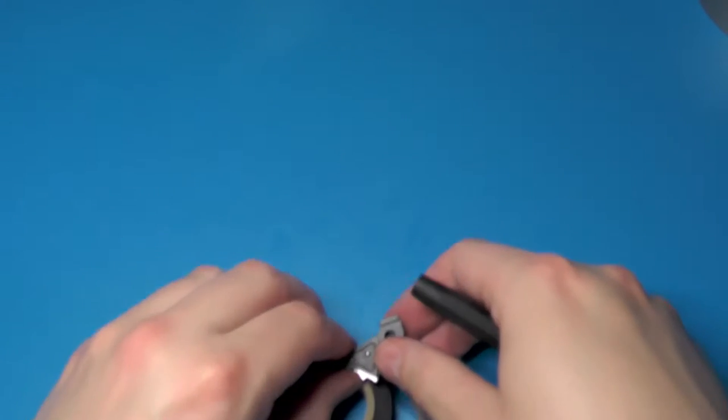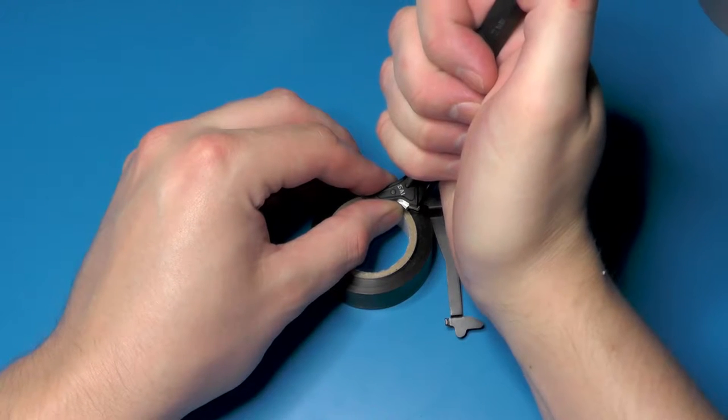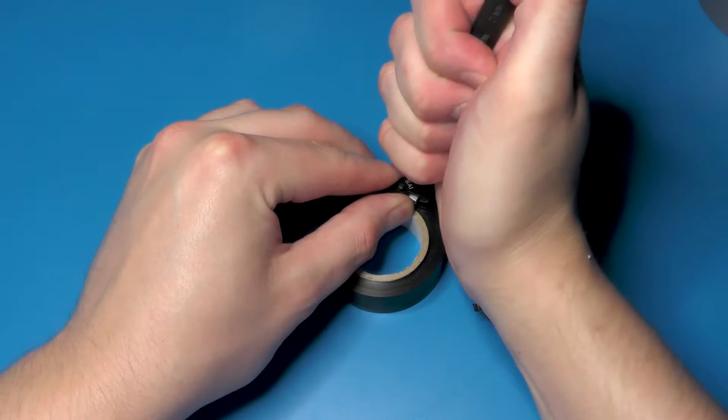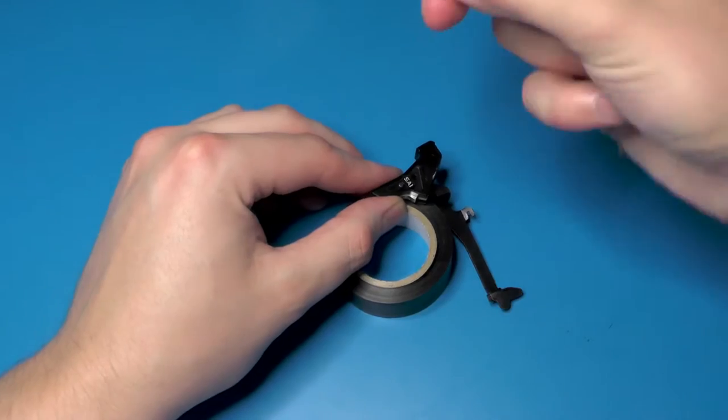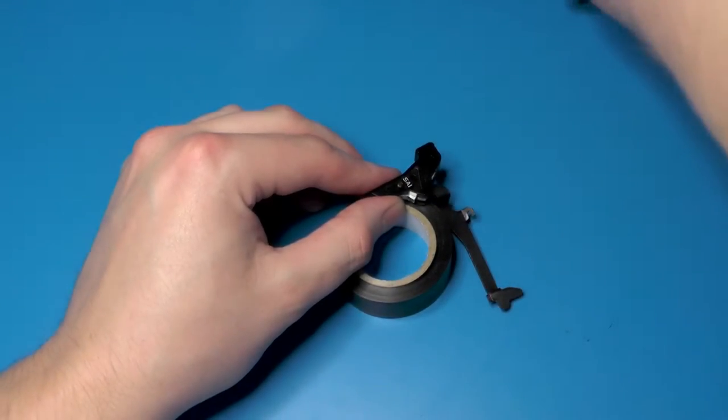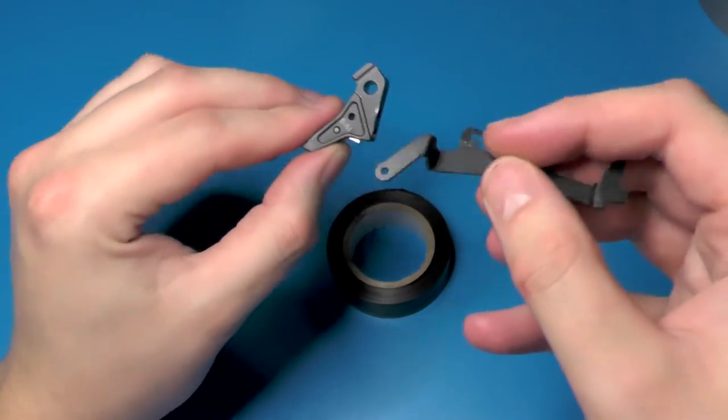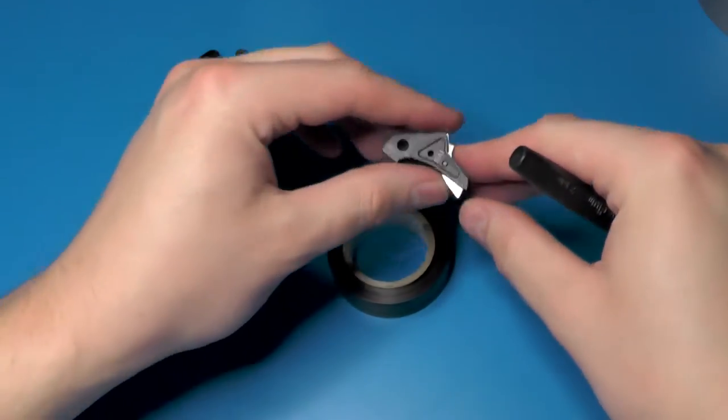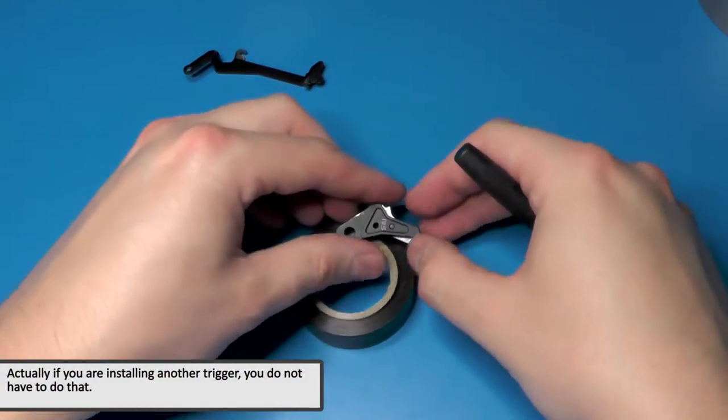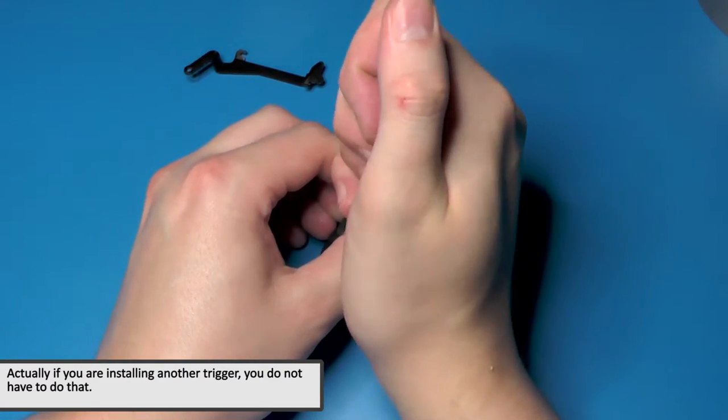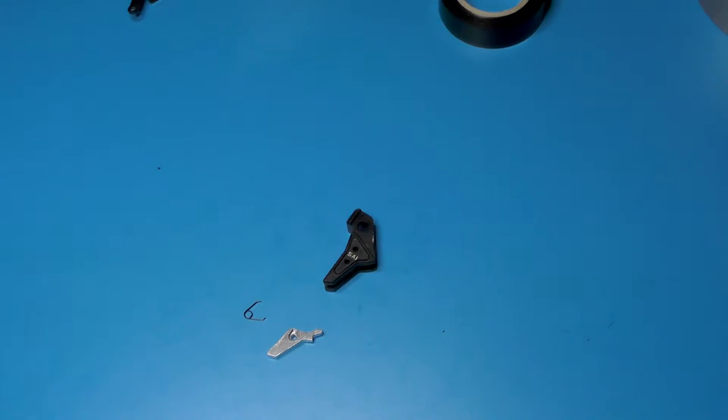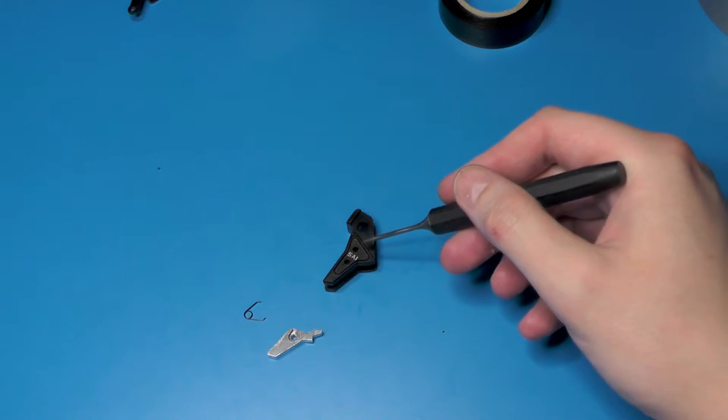So the top pin is what's holding the trigger bar in place, and the bottom pin is holding the trigger safety in place. So let's get a smaller roll of tape and we're simply going to push out the top pin. Put that to the side for now, and the trigger bar is going to come off. And then you need to also punch out the bottom pin.